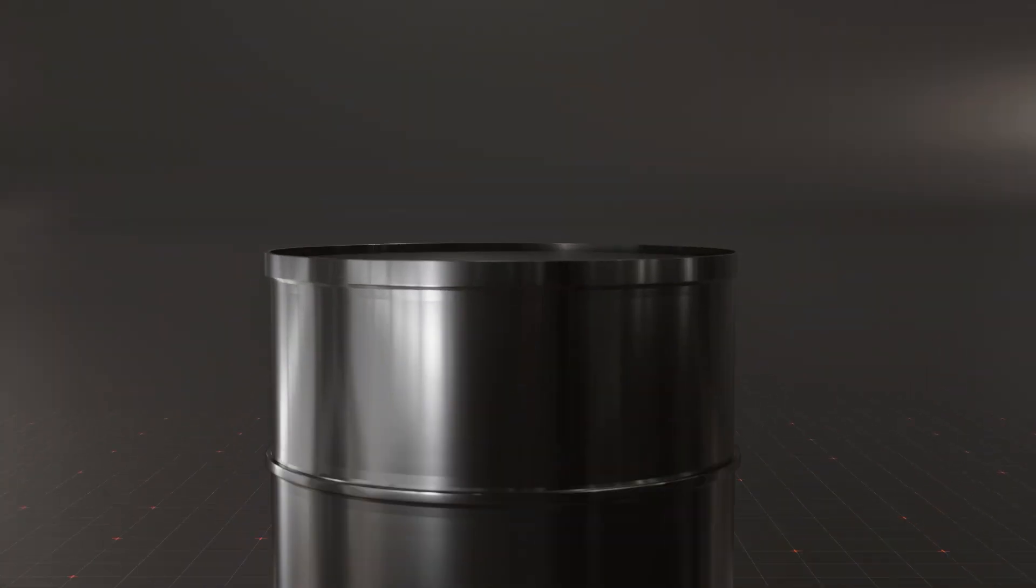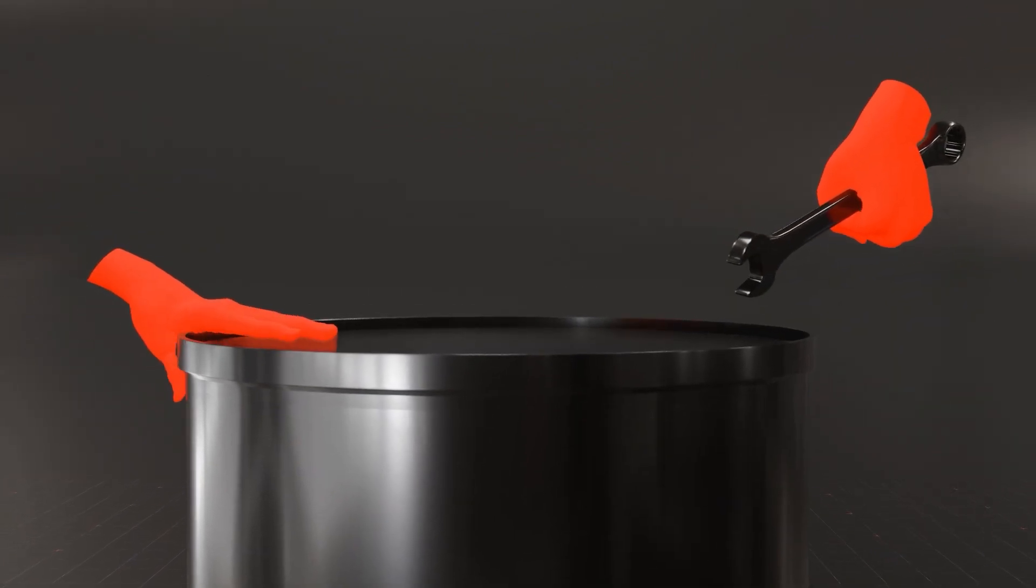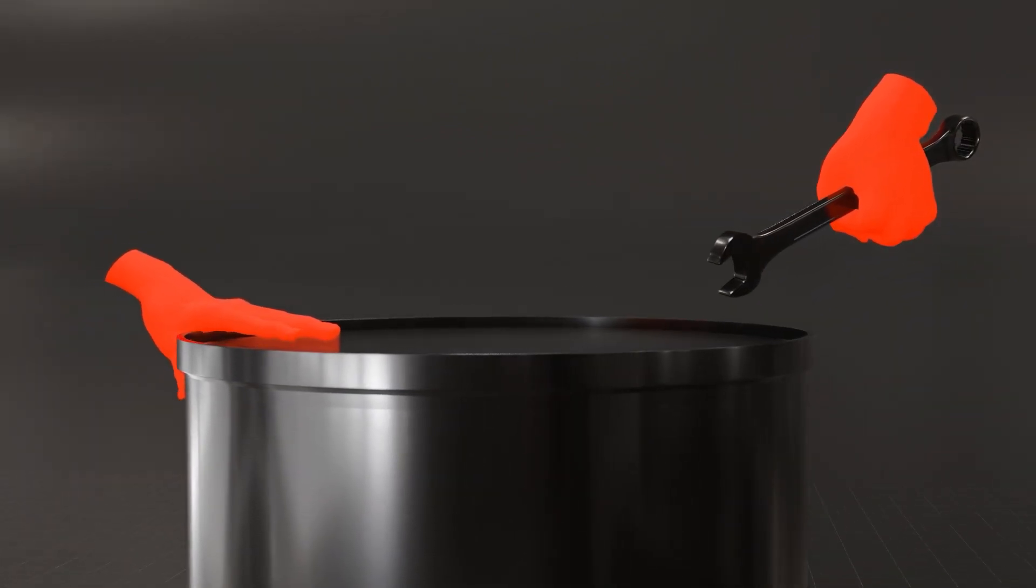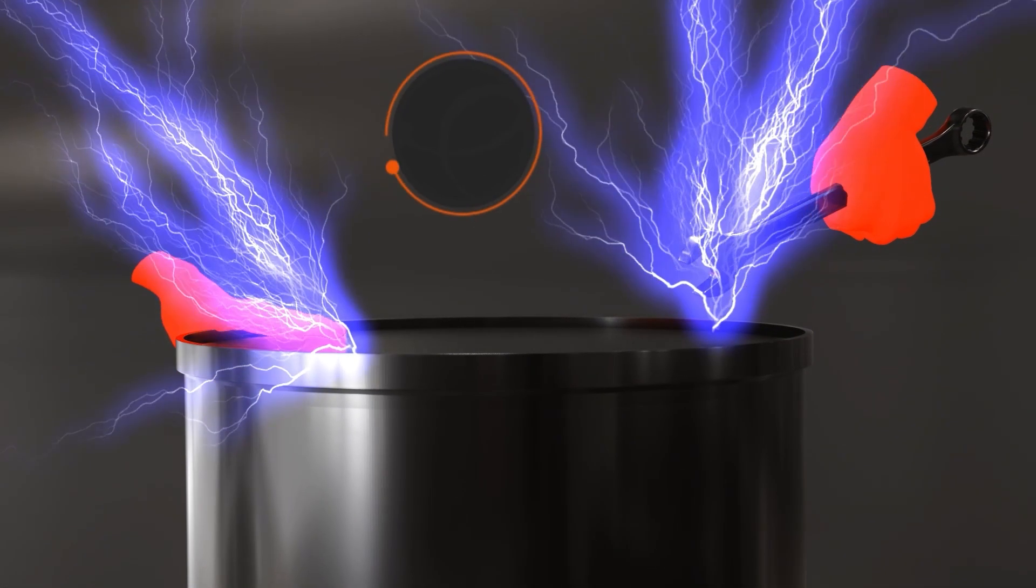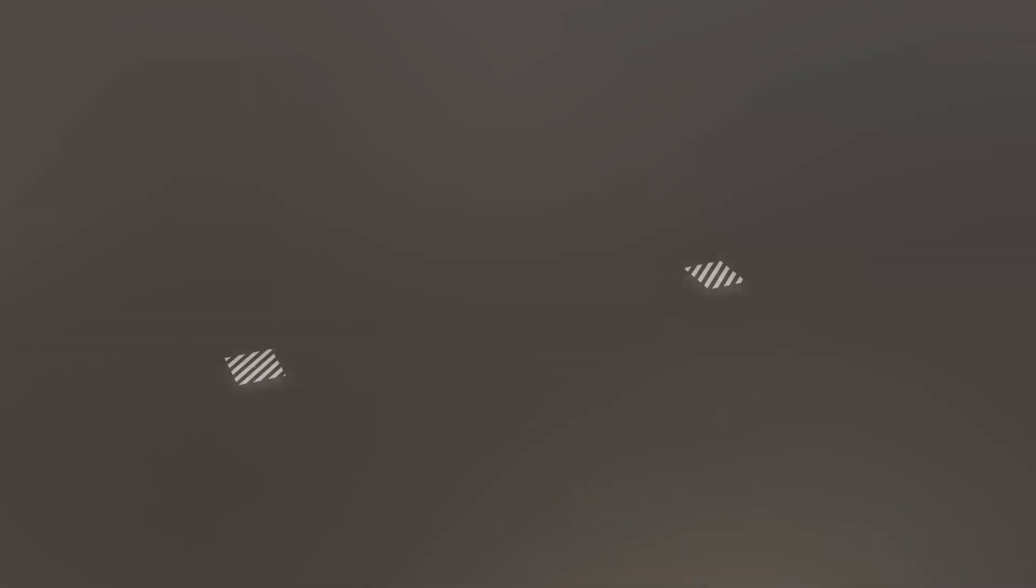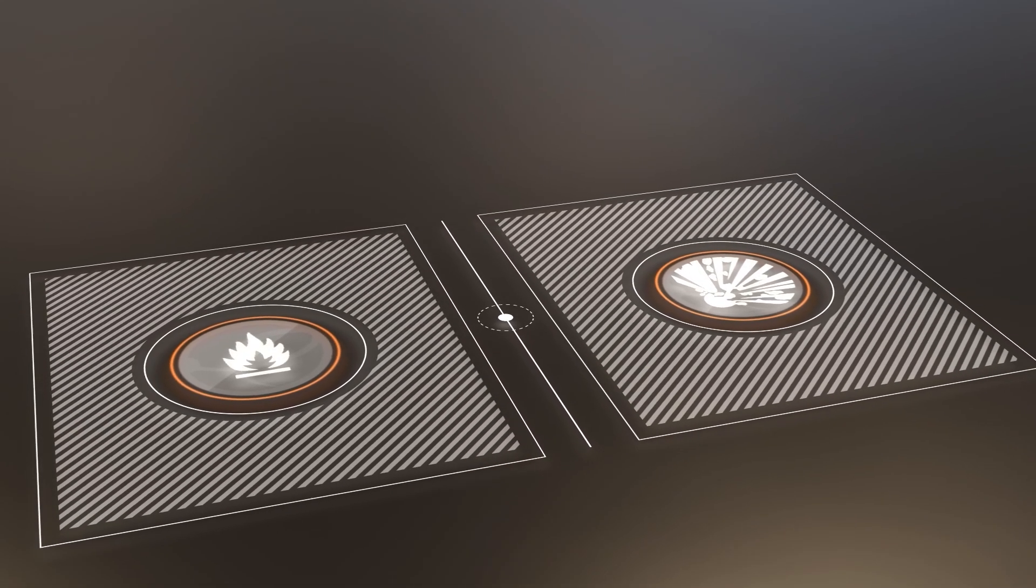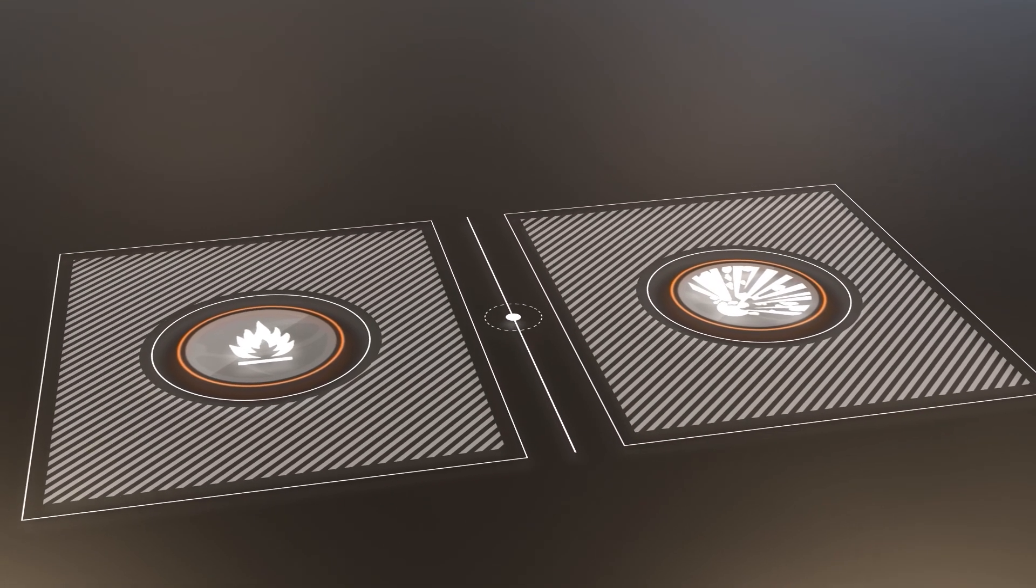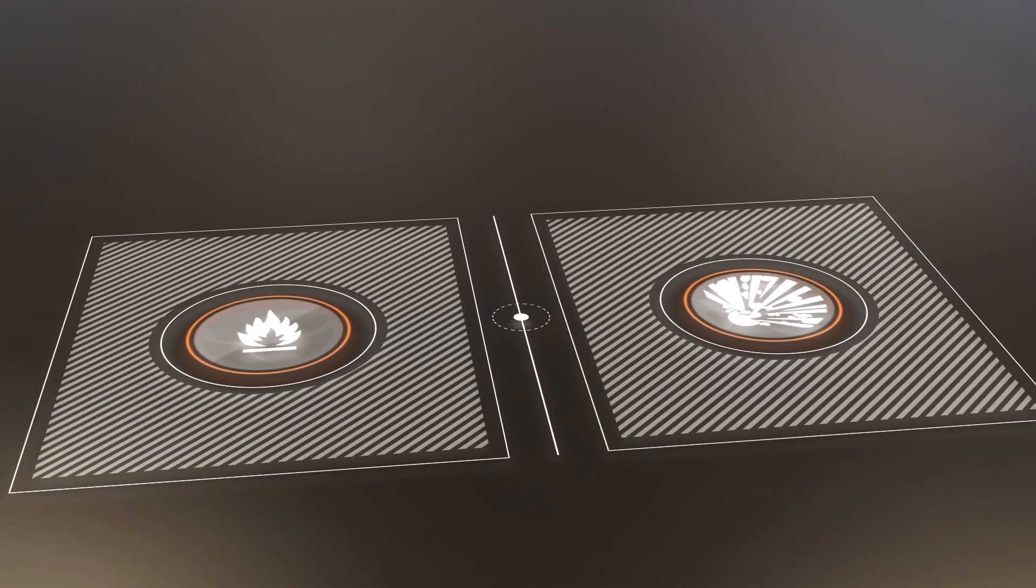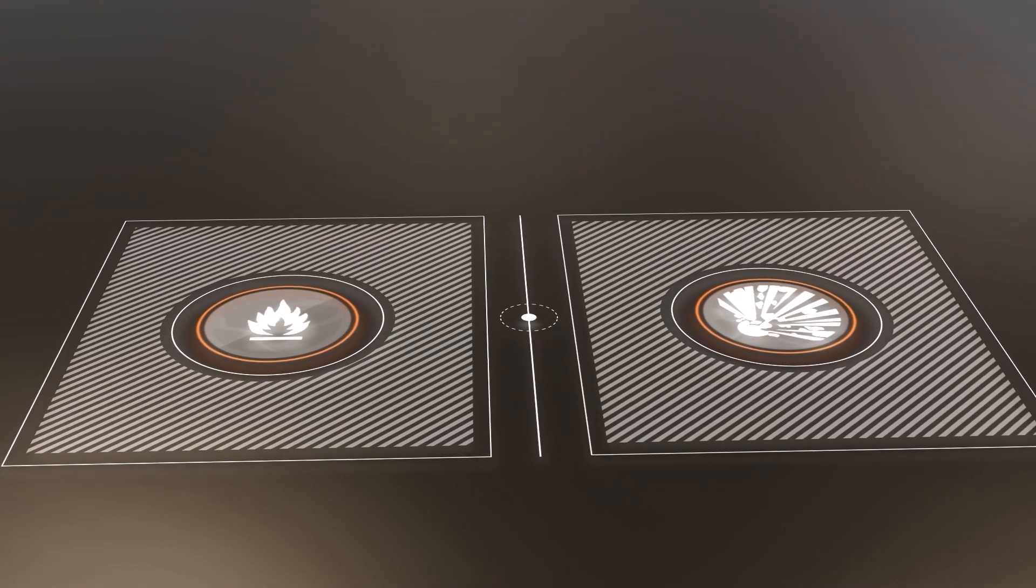If a container hasn't been correctly earthed, bringing a conductive object close to it, such as a spanner, or even touching the container with your hand, could cause a spark. Should this occur in a flammable or explosive atmosphere where fuel and oxygen are present and in the right concentrations, this sudden electrostatic discharge can lead to a spark, completing the fire triangle and leading to a fire or even worse.